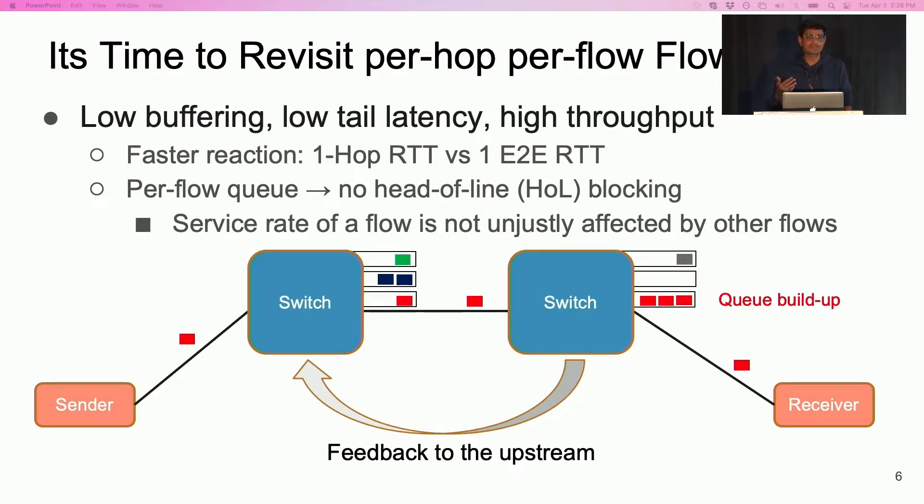Notice that the upstream switch is able to throttle the flow causing congestion within one-hop RTT. In contrast, end-to-end schemes like HPCC take an end-to-end RTT to adjust the rate. Faster response to congestion means reduced buffering at the tail.